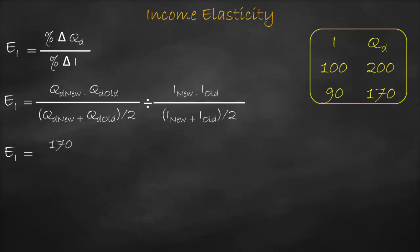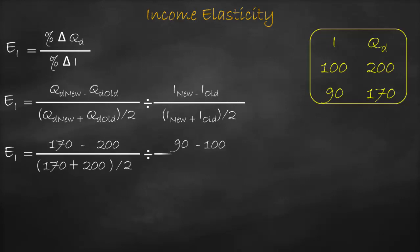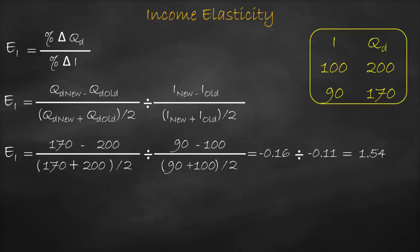Substituting: 170 minus 200, divided by (170 plus 200) divided by 2, divided by 90 minus 100, divided by (90 plus 100) divided by 2. This gives us negative 0.16 divided by negative 0.11, which gives us 1.54.